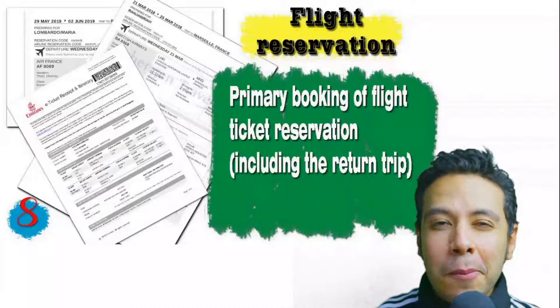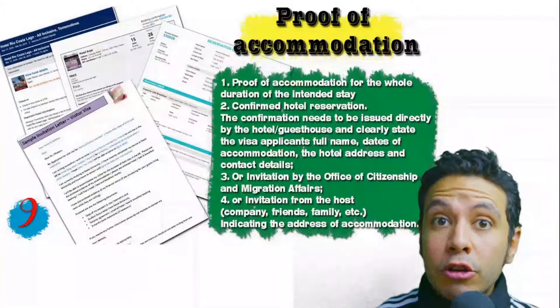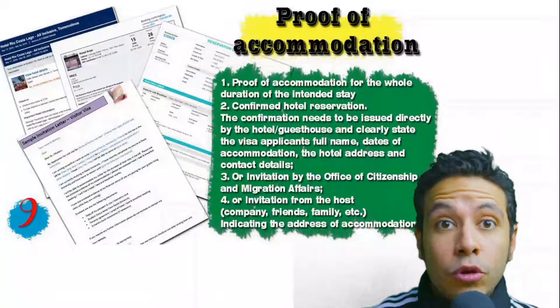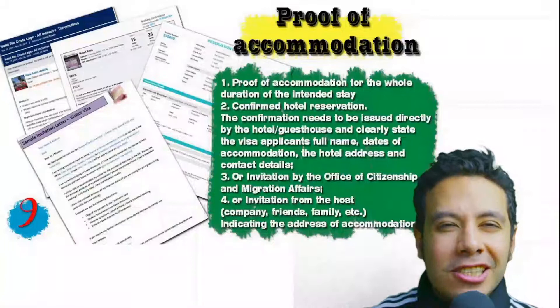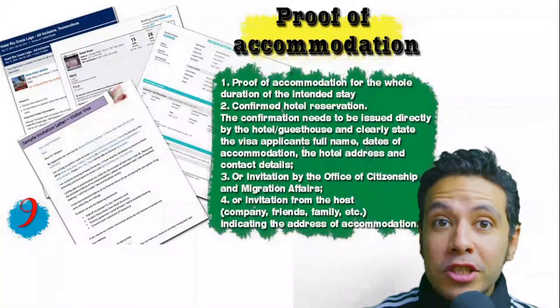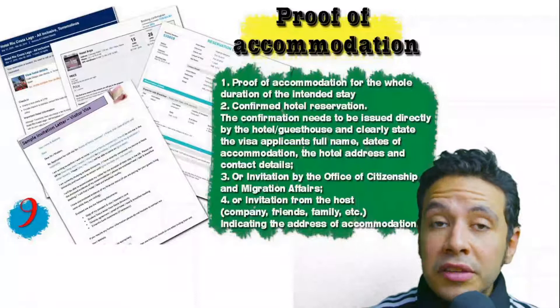You will also need proof of accommodation: a confirmed hotel reservation, an invitation from a host, or an invitation from an organization you are visiting. An initial booking is generally acceptable, but in some cases a confirmed booking may be needed. The hotel name, address, and contact number must be mentioned. If invited by a person, the invitation letter should either be mailed directly to the embassy or submitted by you alongside a copy of that person's passport.